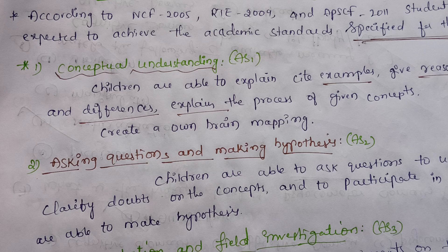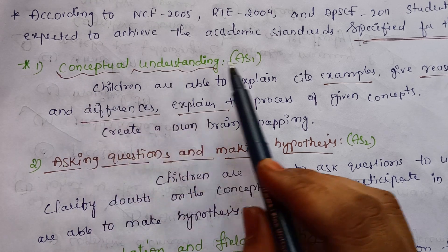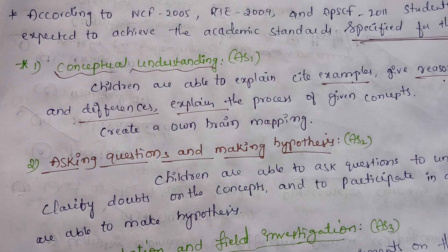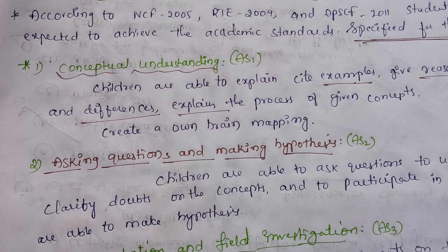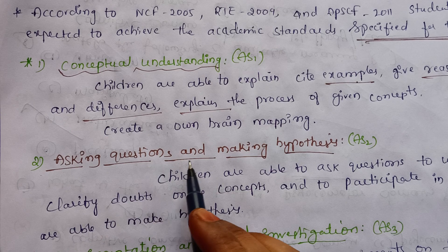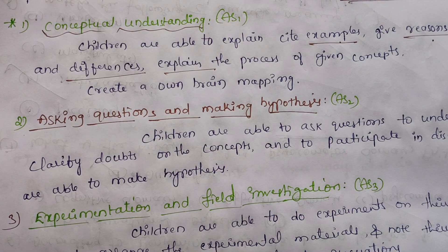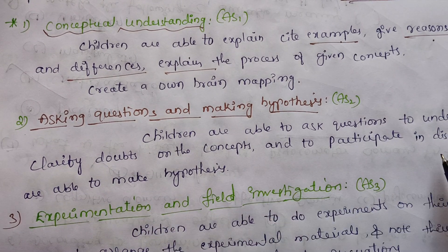Conceptual understanding includes examples, reasons, comparison, differentiation, explanation, and mind mapping. The next academic standard is asking questions and making hypothesis — children are able to ask questions to understand, to clarify doubts about concepts.